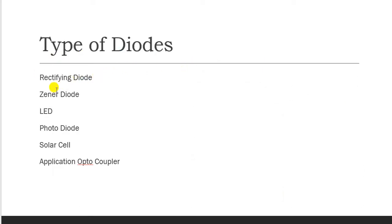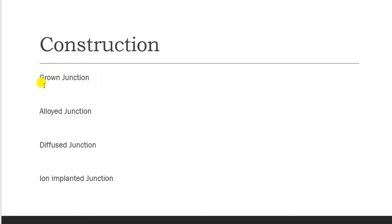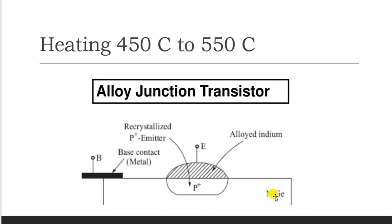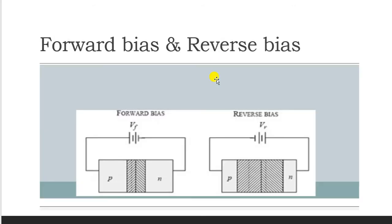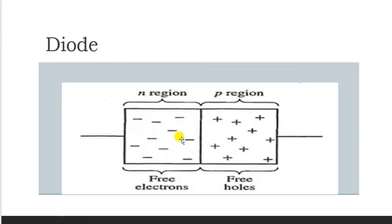In our syllabus, we will discuss the rectifying diode, Zener diode, LED, photodiode, solar cell, and optocoupler. Regarding construction, there are four major methods: grown junction, alloy junction, diffuse junction, and epitaxial implementation. In the alloy junction method, germanium (N-type material) and indium (P-type material) are combined and heated to 400–500 degrees Celsius until liquefied, and upon solidification the PN junction is formed.